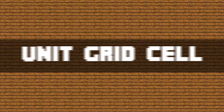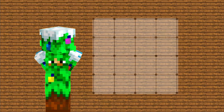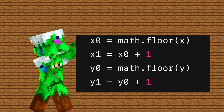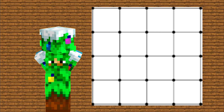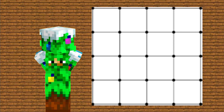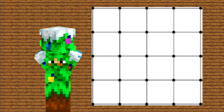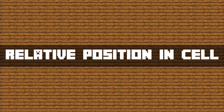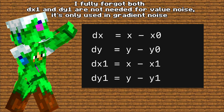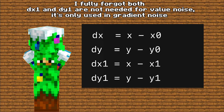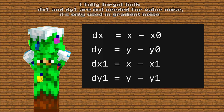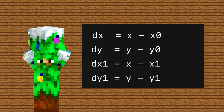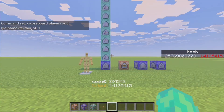We start with the unit grid cell. Perlin noise splits the entire space into a grid — the grid lines sit at all integer coordinates: zero, one, two, three, and so on. The space between four neighboring grid points in 2D, or eight points in 3D, forms what we call a unit grid cell. We then need to find the relative position inside of the cell. This math gives us local coordinates inside a cell, which is very important because it tells us how close we are to each corner — exactly what Perlin noise uses for later blending between heights.